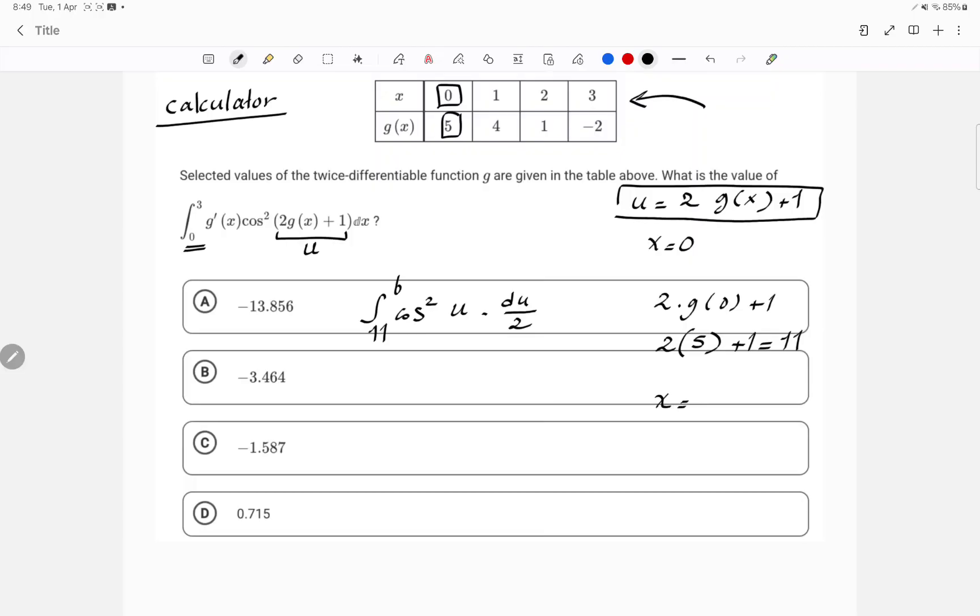How about when x is equal to 3, which is the upper limit of integration? Now I'm going to say 2g(3) plus 1. So 2 times, when x is 3, g is equal to negative 2. And the whole thing is equal to negative 3. Replace the b with negative 3.